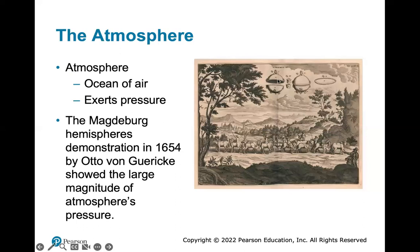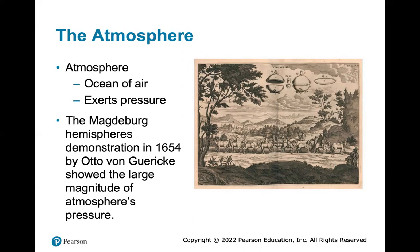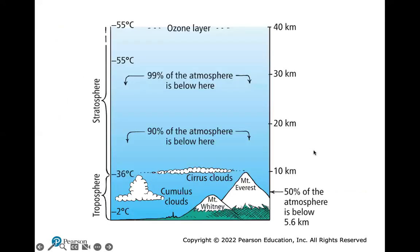He had two spheres that he evacuated. You can look up the Magdeburg demonstration. What you see in the image is a team of horses pulling in opposite directions — they could not pull the sphere apart because of the atmospheric pressure keeping the two halves together. That's what the image is demonstrating.